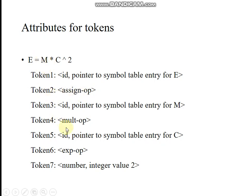'M' is a capital letter, so it is an identifier token — its value is stored in the symbol table entry, which serves as the lexeme. The star is an operator token. 'C' is an identifier whose value is available in the symbol table entry. The exponentiation symbol is also an operator token.